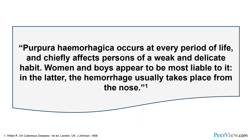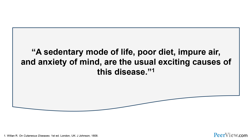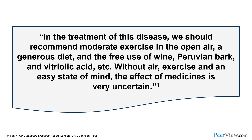He gave us some insights: purpura hemorrhagica occurs at every stage of life and chiefly affects persons of a weak and delicate habit. He said a sedentary mode of life, poor diet, impure air, and anxiety of mind are the usual exciting causes. For treatment, he recommended moderate exercise in the open air, a generous diet, the free use of wine, Peruvian bark, and vitriolic acid. Today, the major change is that we have medicines which are more effective, and the uncertainties are much less than he described centuries ago.